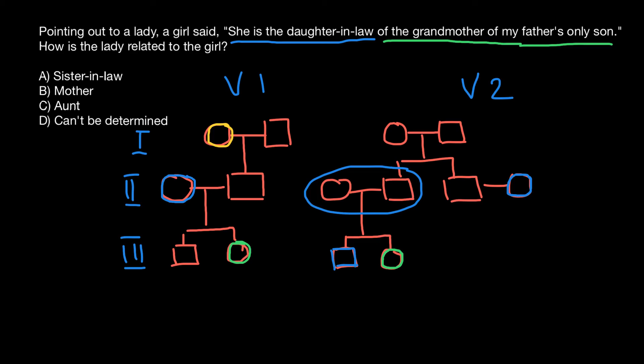His wife would also be a daughter-in-law to the grandparents. So two variants are possible: this girl can be talking about her mother if her grandparents had only one son, or she could be talking about the wife of her uncle if her grandparents had two or more sons. The relationship cannot be determined — we have to choose answer D. That's all for today. Thank you for your attention, please subscribe for my new videos posted almost every day. See you in the next video, goodbye.